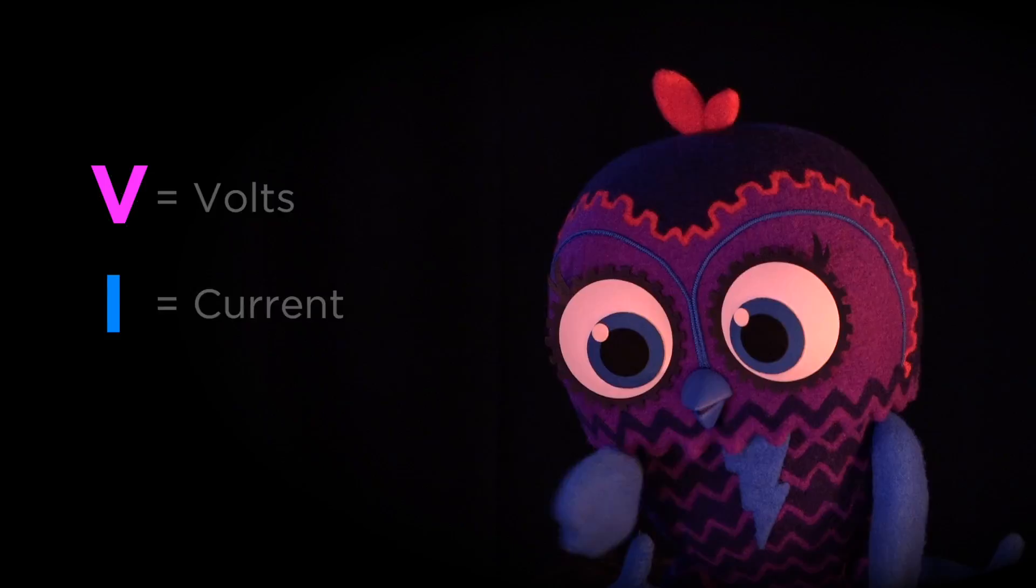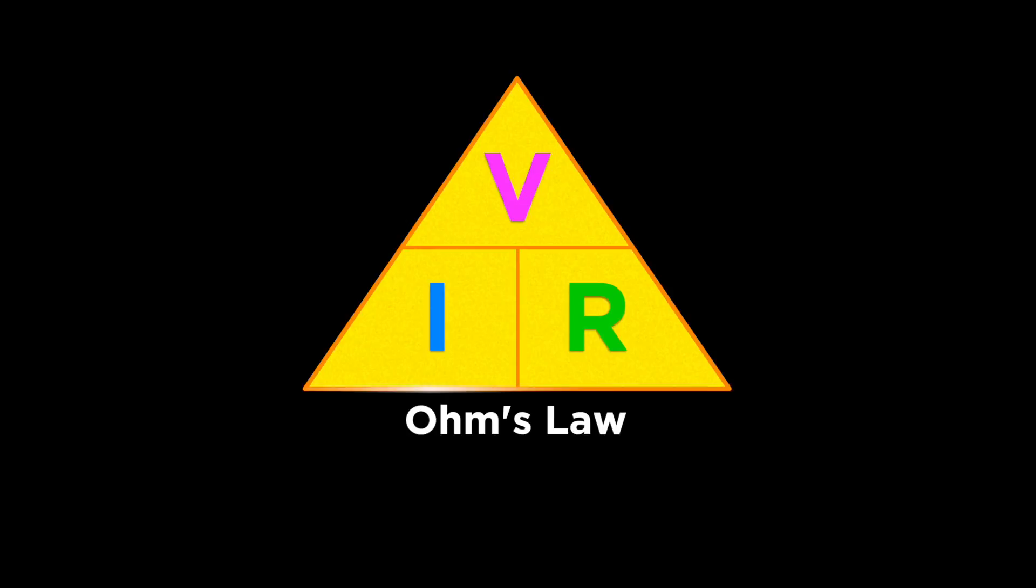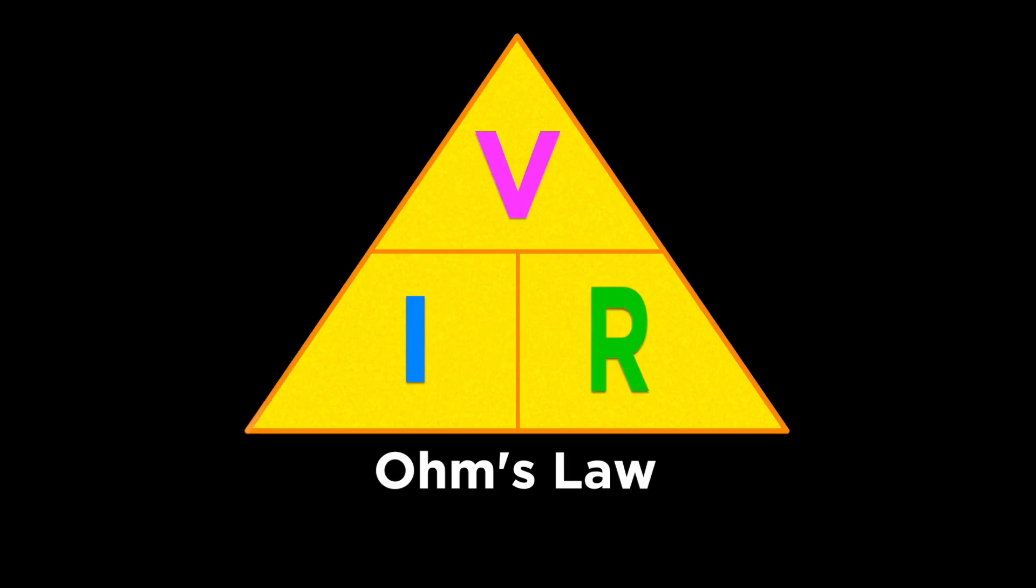You can't break Ohm's Law, because it's always true. To find one value, you only need the other two. Say you're working in a circuit and you need a certain current.